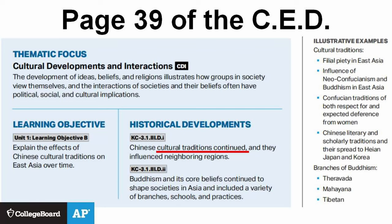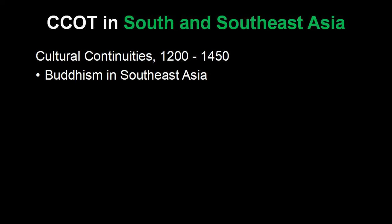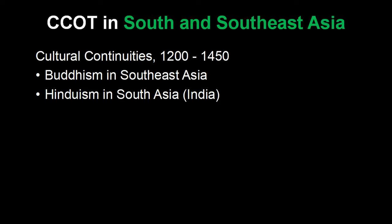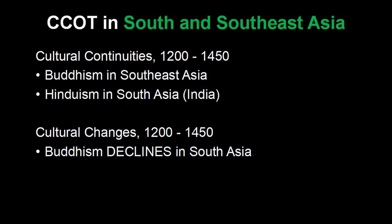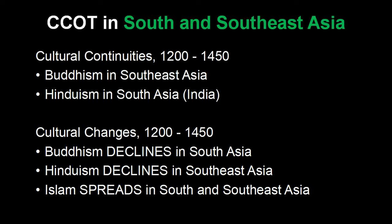Continuity is perhaps an even bigger deal when it comes to cultural belief systems. It says right in the CED that Chinese cultural traditions continued: Confucianism, Taoism, filial piety, as well as Buddhism. Buddhism continues to be important in Southeast Asia as well, and Hinduism continues to flourish in South Asia. Some changes are that Buddhism experiences a significant decline in South Asia, and Hinduism also declines in Southeast Asia. At the same time, Islam is on the rise in both South Asia and Southeast Asia. These are all significant cultural changes, even as other cultural traditions continue — it's a complex cultural mix. Christianity continues to be a big deal in Europe as well.